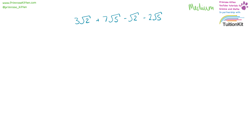3 square root 2 plus 7 square root 5 minus square root 2 minus 2 square root 5. 3 square root 2 minus square root 2 is 2 square root 2, and 7 square root 5 minus 2 square root 5 is plus 5 square root 5. So the answer is 2 square root 2 plus 5 square root 5.